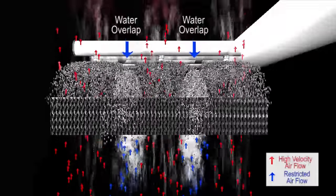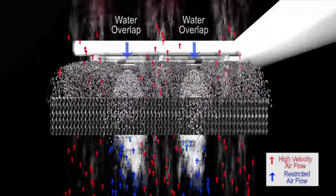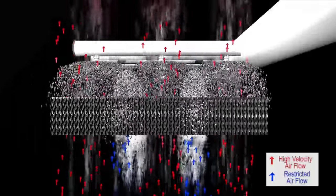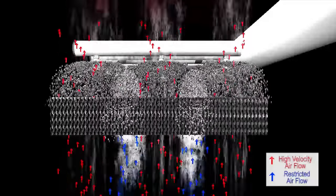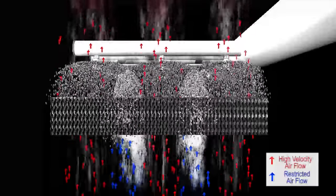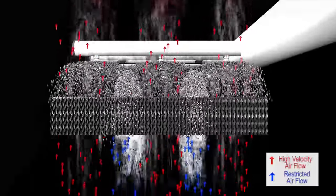The restrictions caused by the overlap cause the remaining air volume to be forced into areas where the water loading is light. Both the volume of air and the velocity will increase in these areas. The red arrows depict the accelerating airflow exiting the film media at high velocities. A gross waste of fan energy.